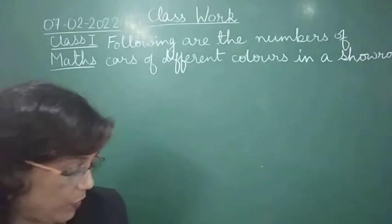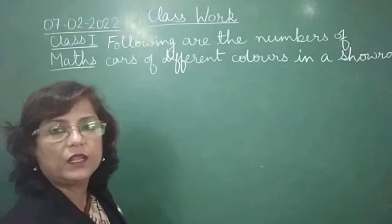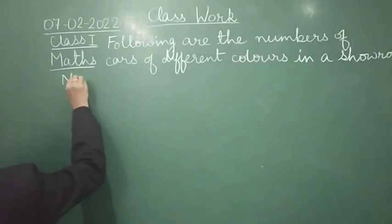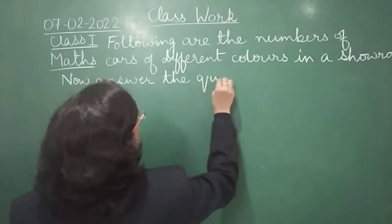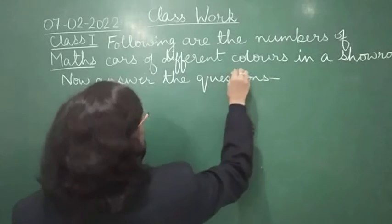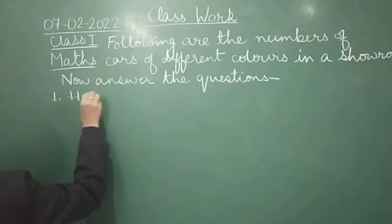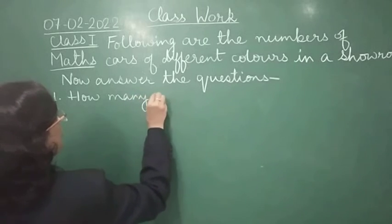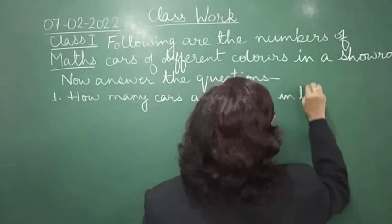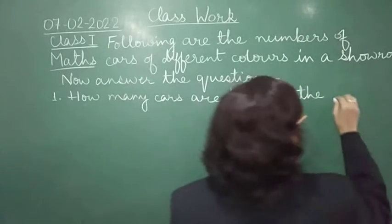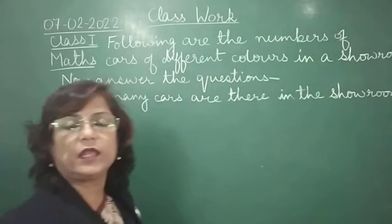Now answer the following questions. Question number one is: how many cars are there in the showroom in total? So we have to find the total number of cars of all colors.